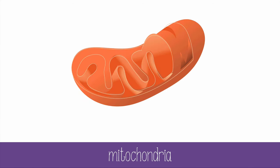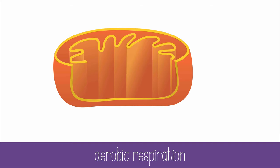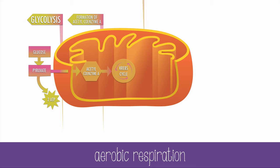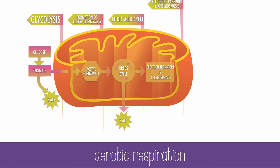Aerobic respiration takes place in the mitochondria of eukaryotic cells and in the cytosol of prokaryotic cells. After glycolysis occurs in the cytosol and pyruvic acid is attached to coenzyme A, there are two major parts: the Krebs cycle, also known as the citric acid cycle, and the electron transport chain, which is paired with chemiosmosis. This last step is where oxygen is used.